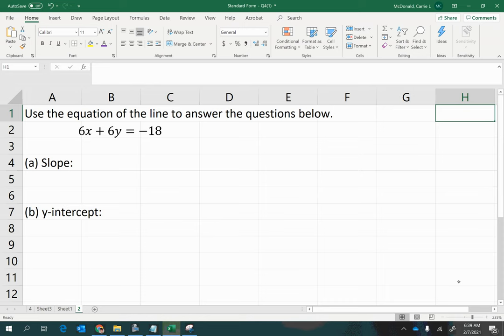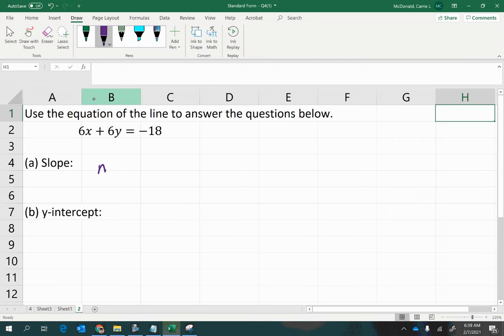There is a very fast way to answer this question without converting it to slope-intercept form. The slope is always equal to the negative of the quotient of the x coefficient and the y coefficient. Here we have positive 6 for x, the x coefficient,